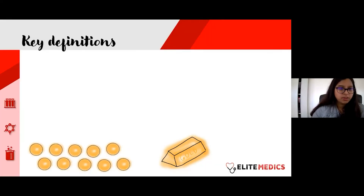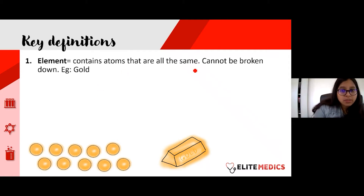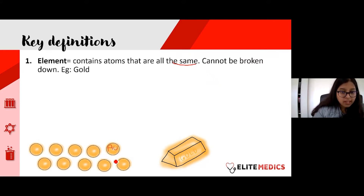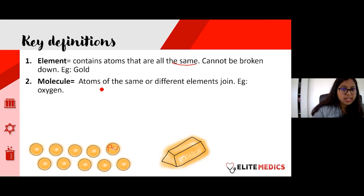Moving on to some key definitions. A lot of these sound similar, so it's really important you know what each one means. An element contains atoms that are all the same — for example, gold (Au). All atoms contain the same number of protons, neutrons, and electrons. Elements cannot be broken down further; if you break down gold, you'll only find gold atoms.